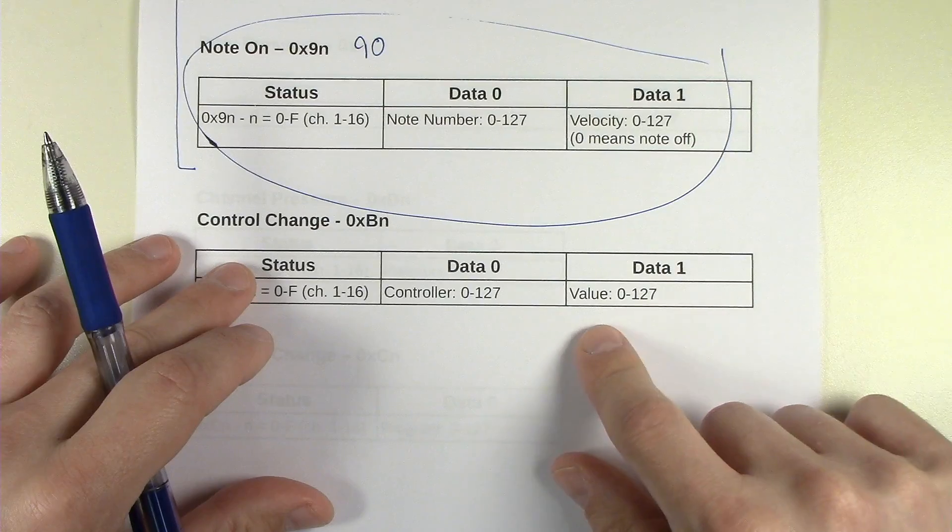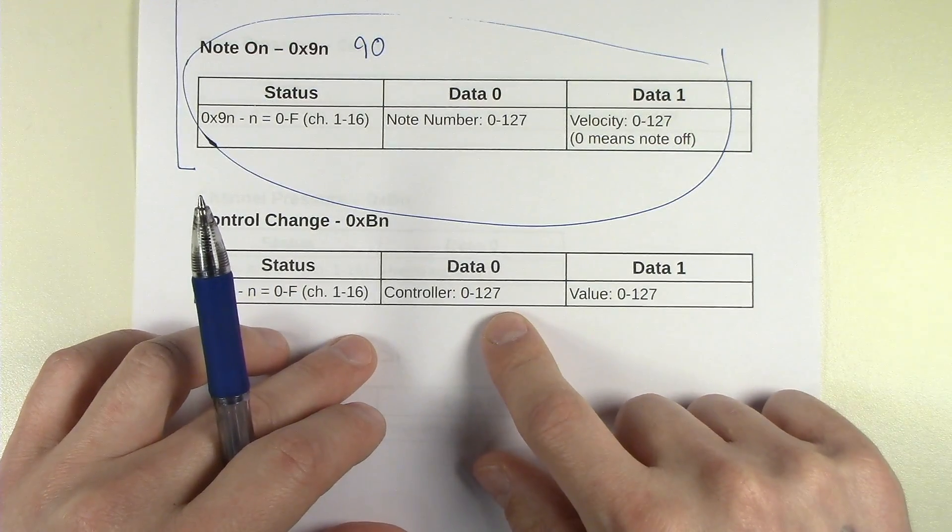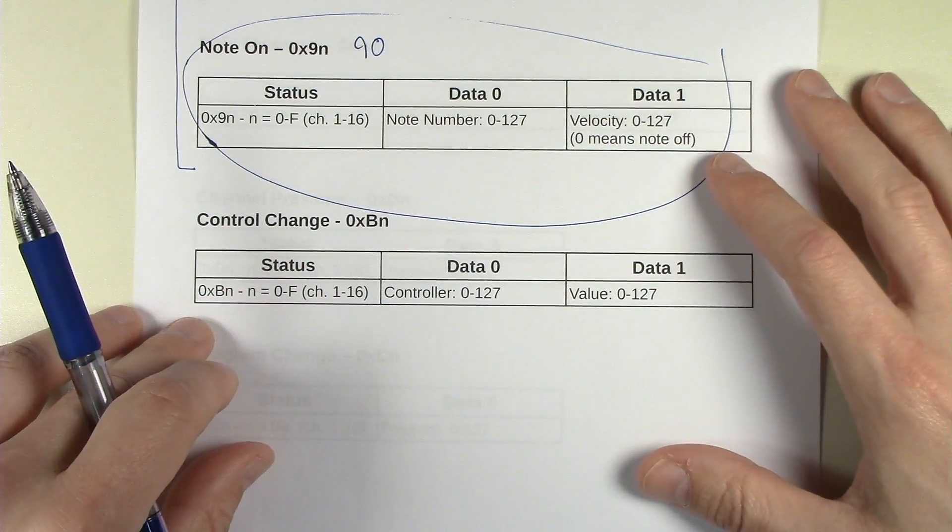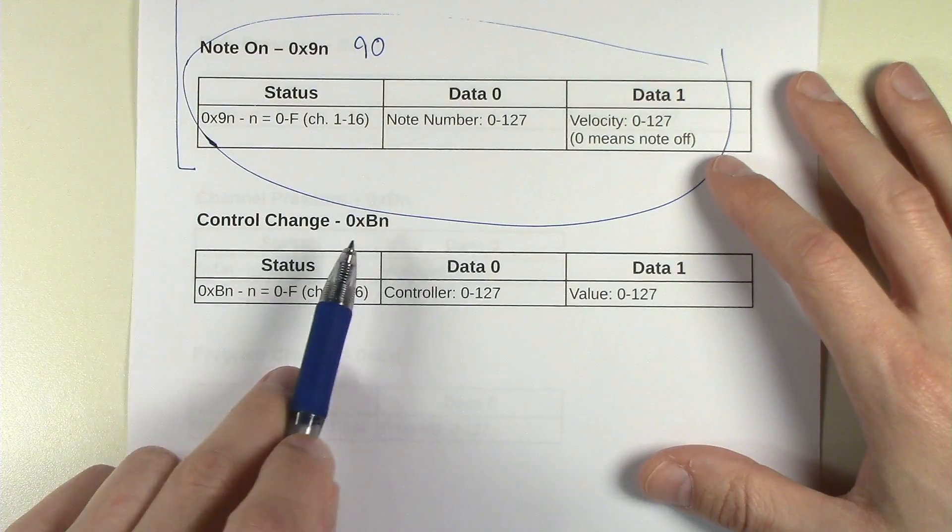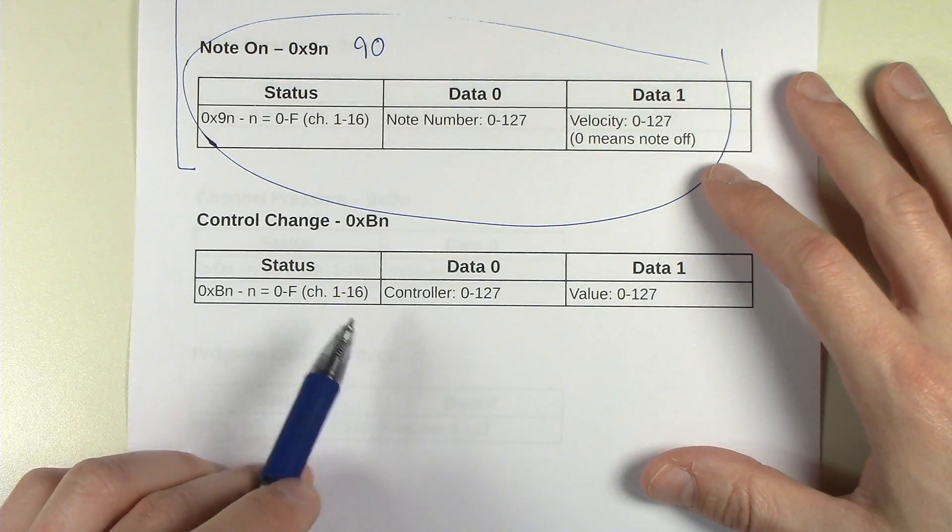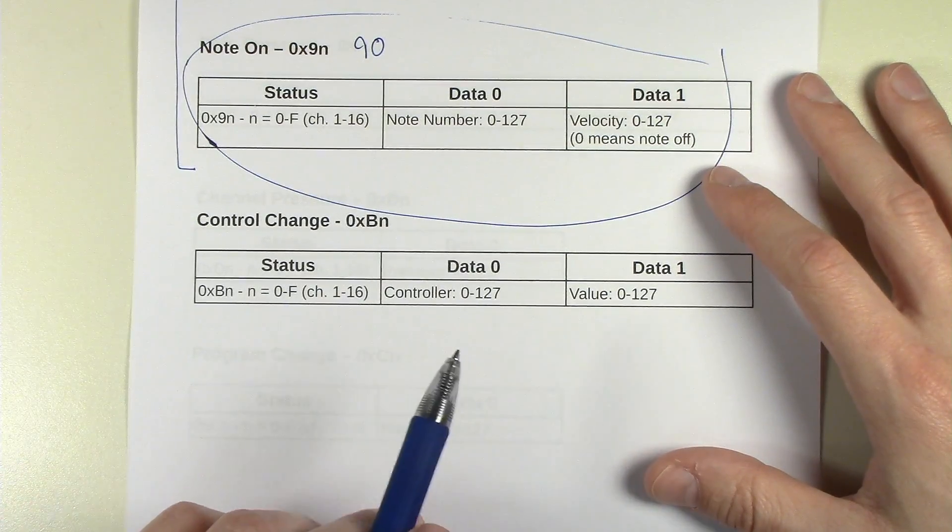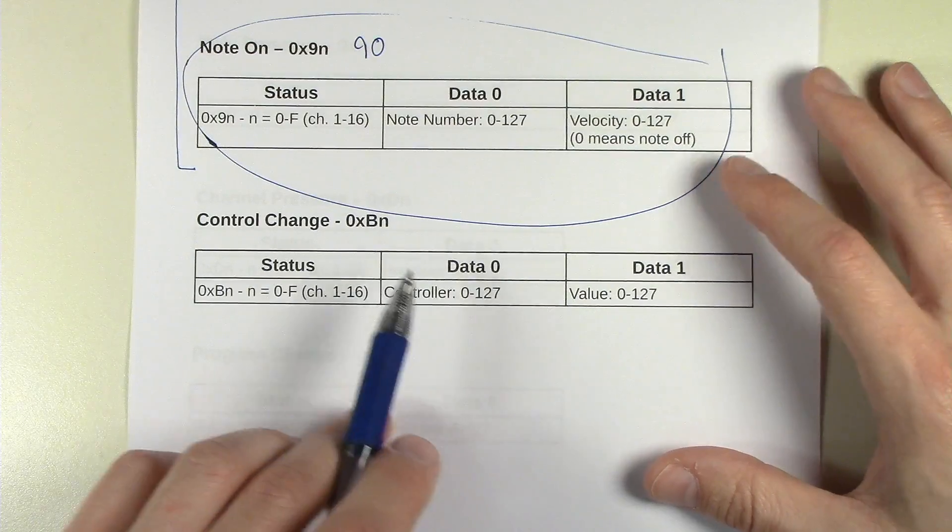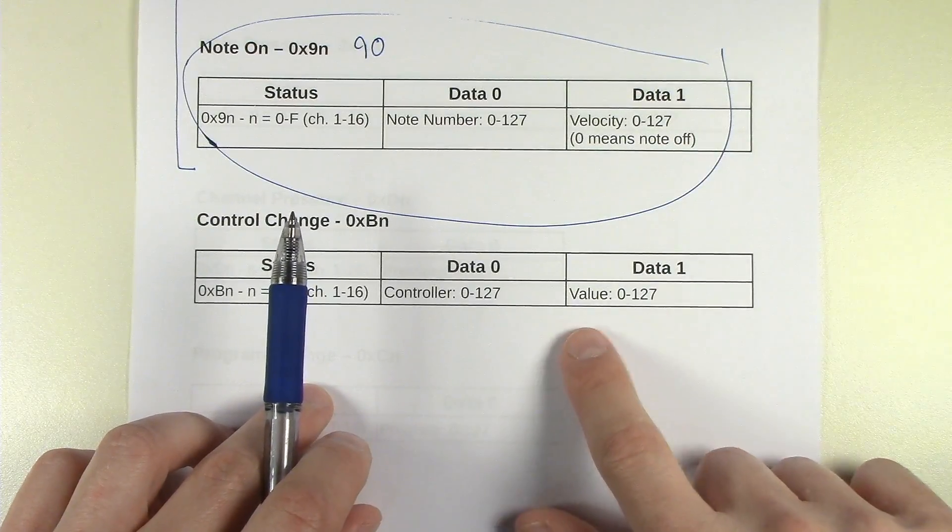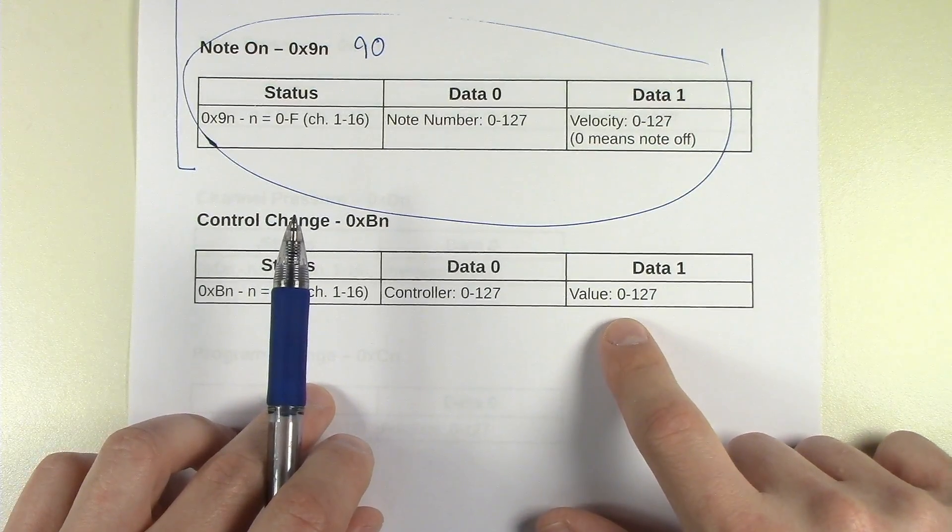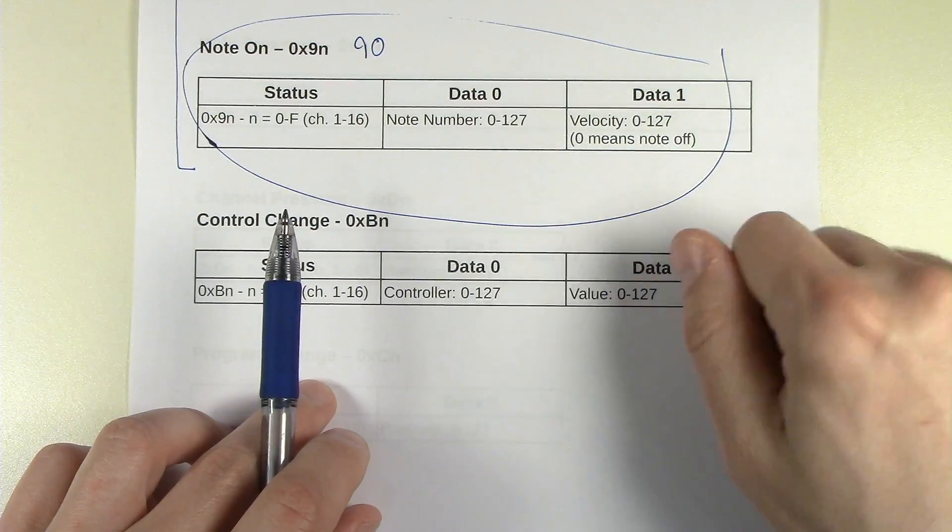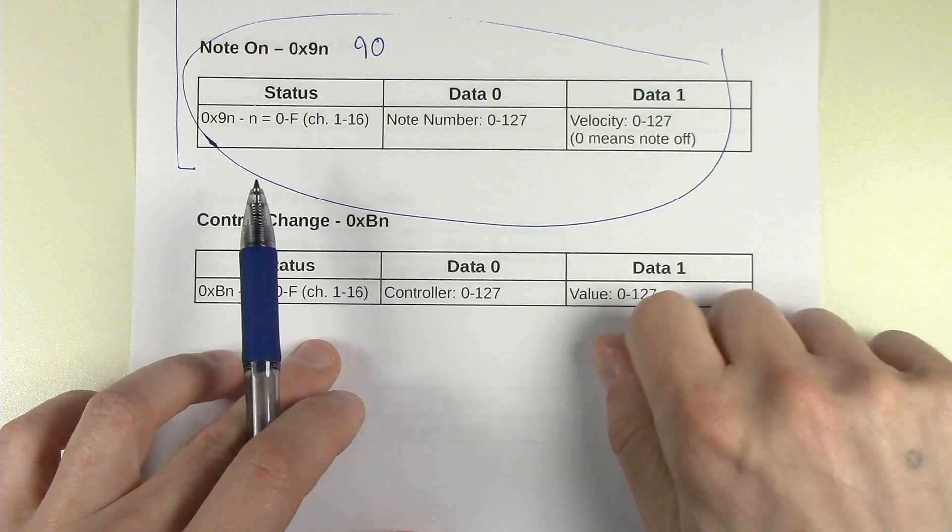And that gives you 7 bits, which is 128 possible combinations of possible values. Other kinds of things like buttons usually use control change as well. Those use usually zero means that you've let go and 127 means you've pressed it down. And within the controller, the first data byte means the controller number. There's 128 controllers.